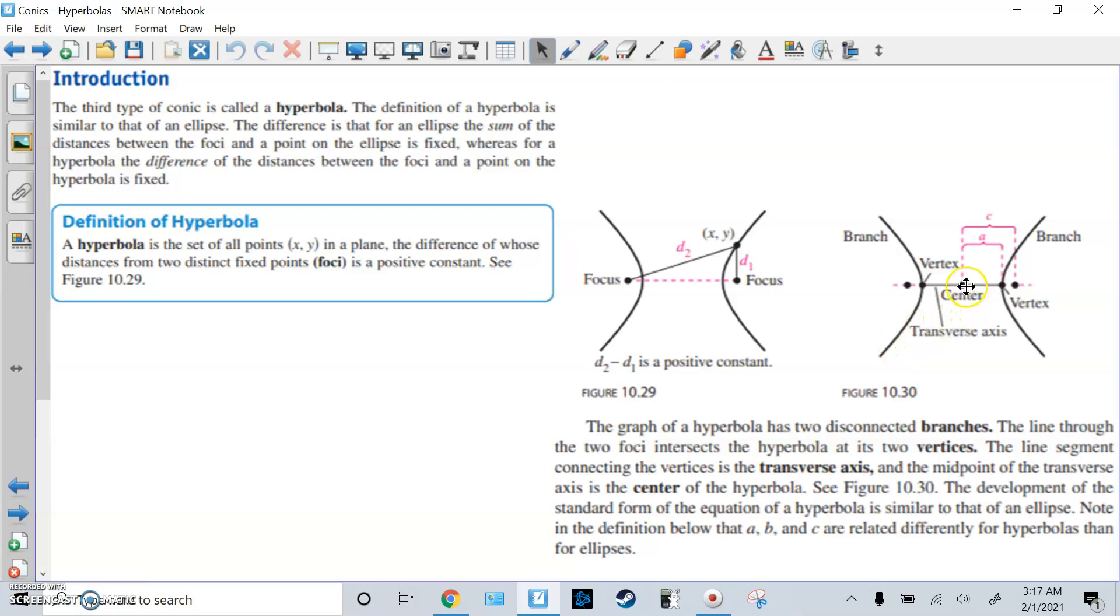Notice the vertex, the center of the vertex is still A, so that didn't change from an ellipse. And the line segment connecting the vertices is called the transverse axis. And the midpoint of the transverse axis is still the center. Also notice that the center to the focus is still C. But the difference here is C is bigger than A. In an ellipse, A was bigger than C because the focus was inside. Now the focus is on the outside.